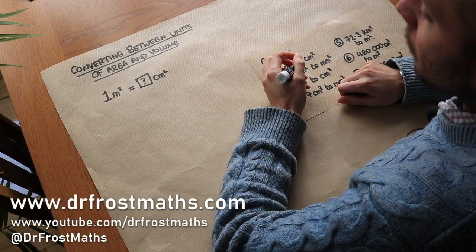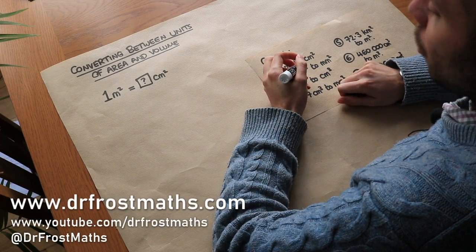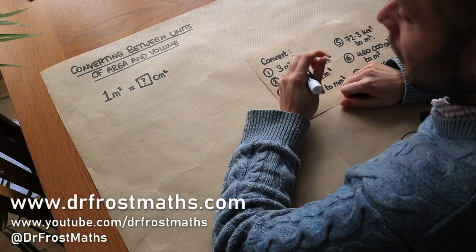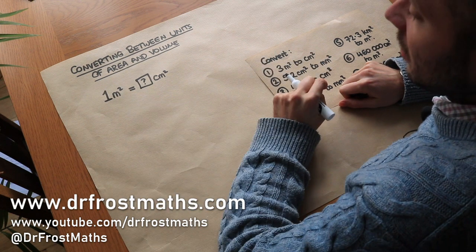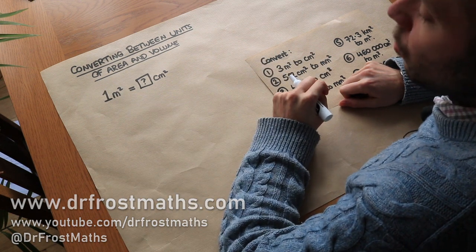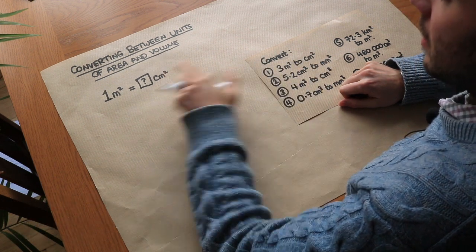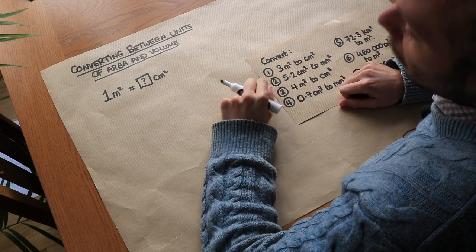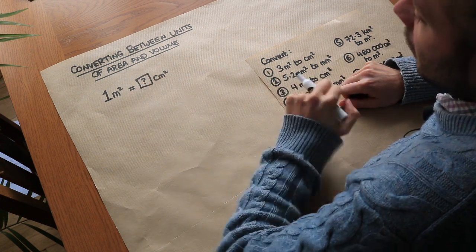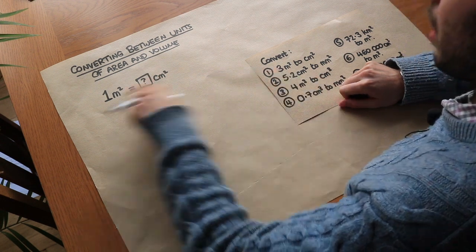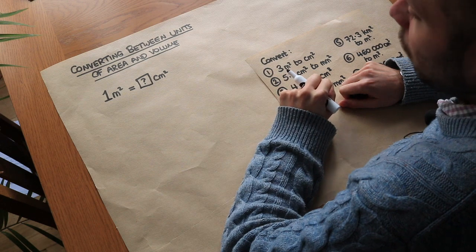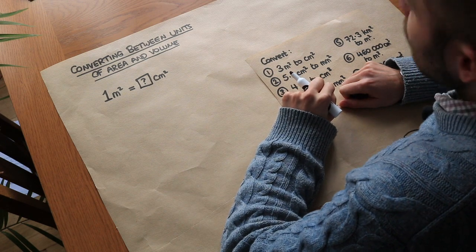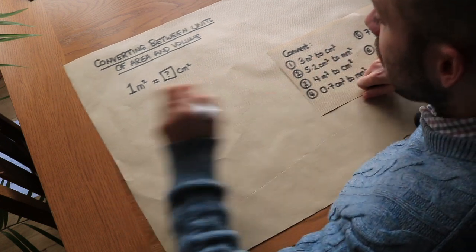Hello and welcome to this video on converting between units of area and volume. Let's suppose that you had one metre squared and you wanted to convert it to centimetres squared. You might think: well, one metre is a hundred centimetres, therefore one metre squared is a hundred centimetres squared — but that would not be correct.